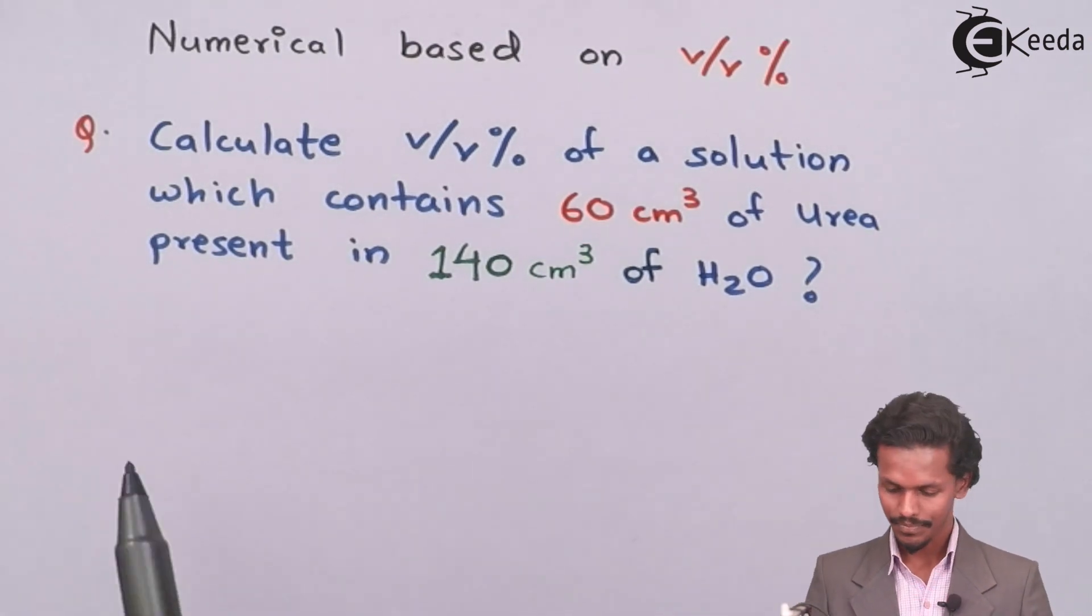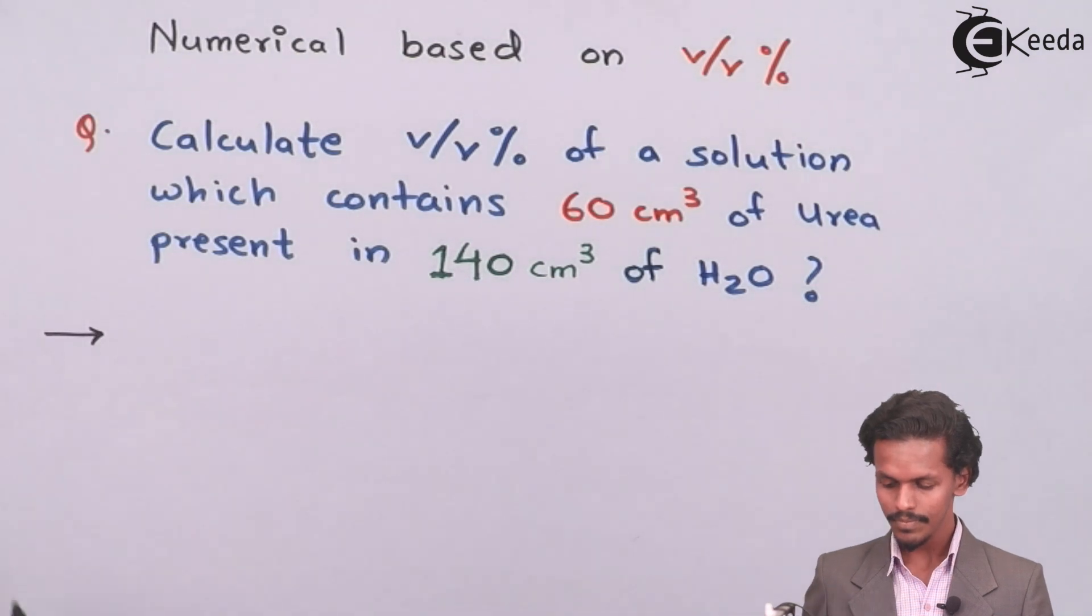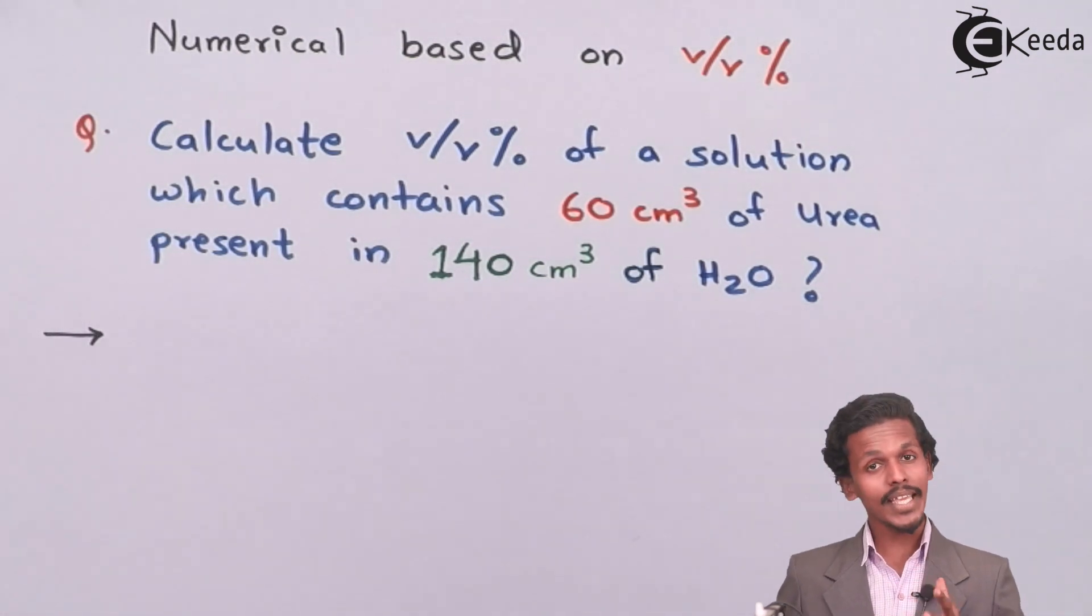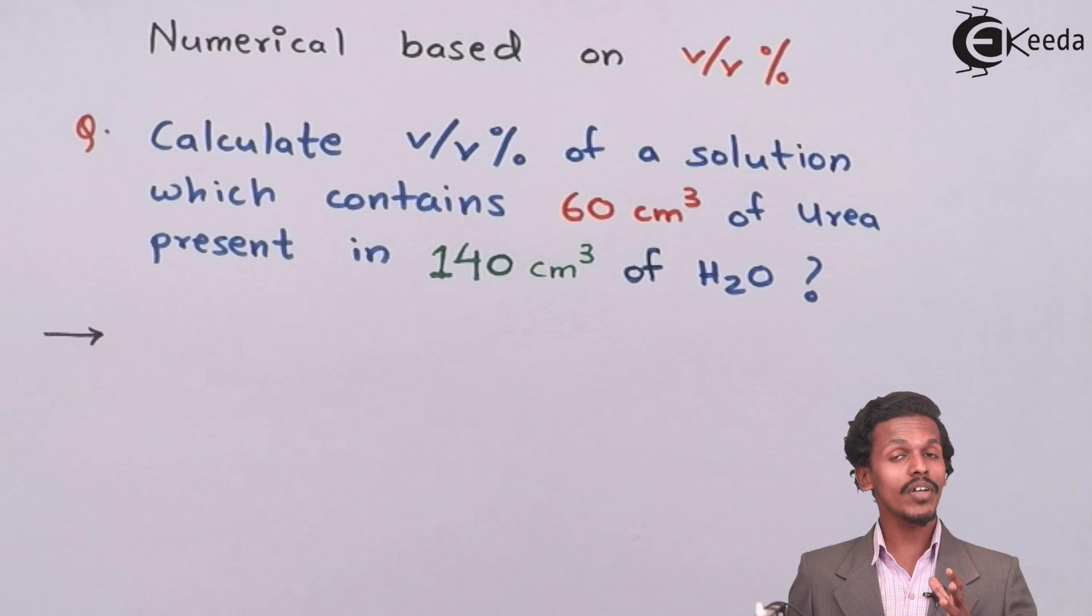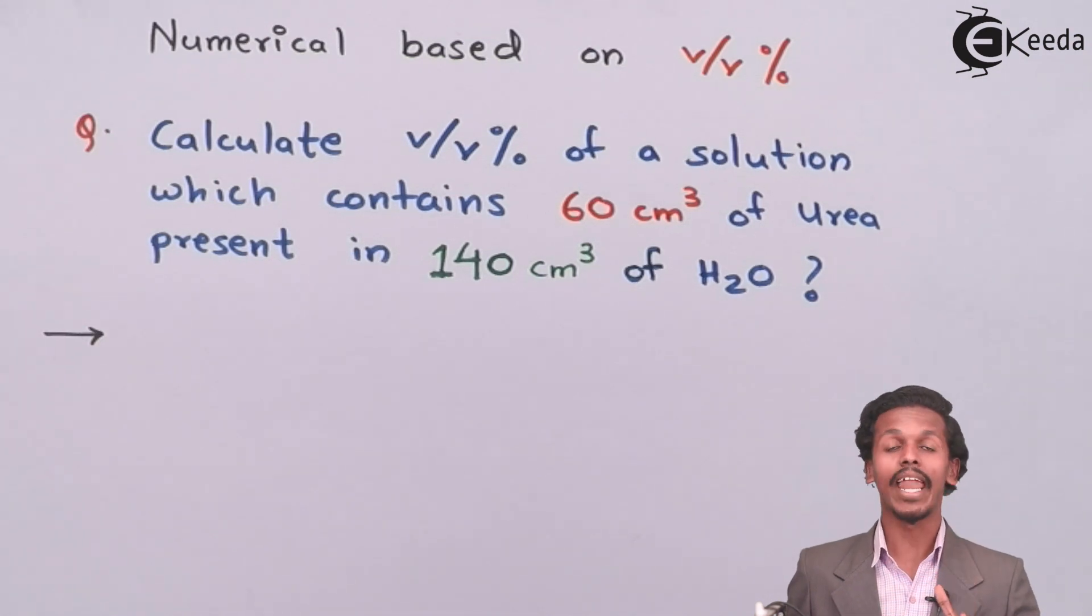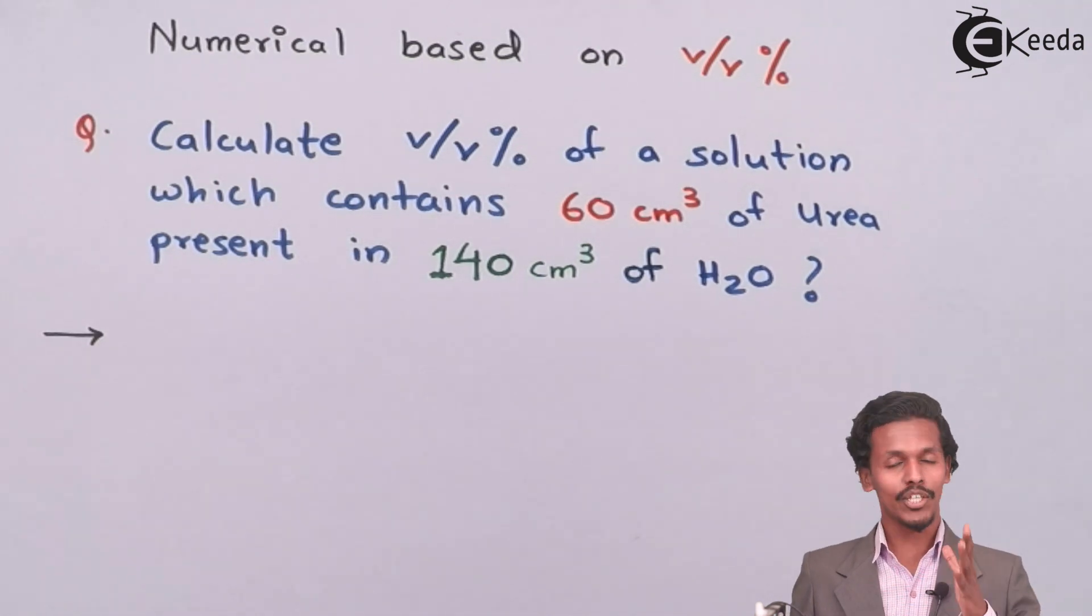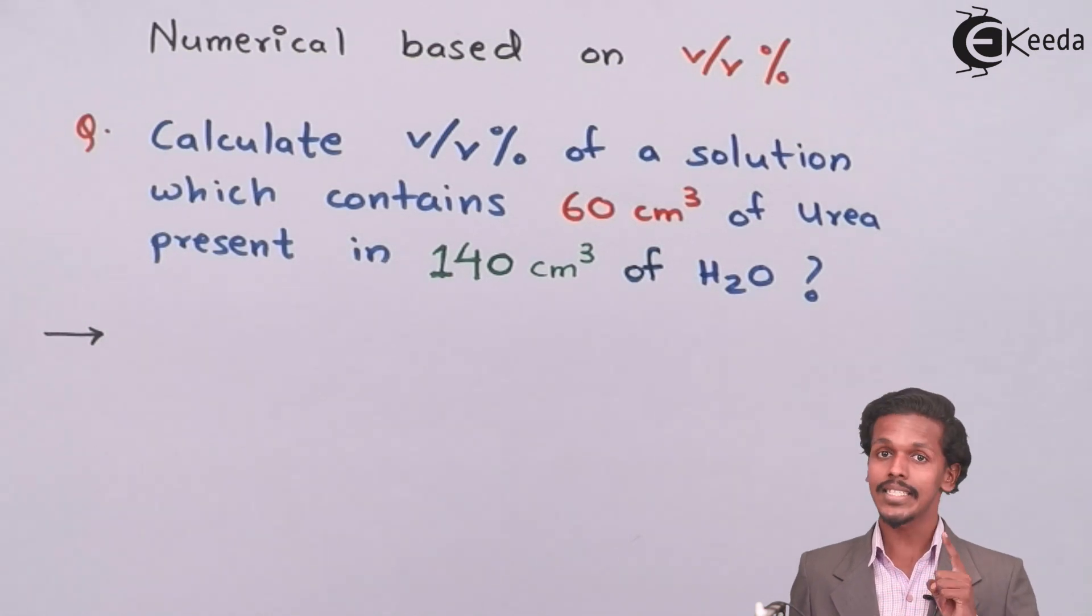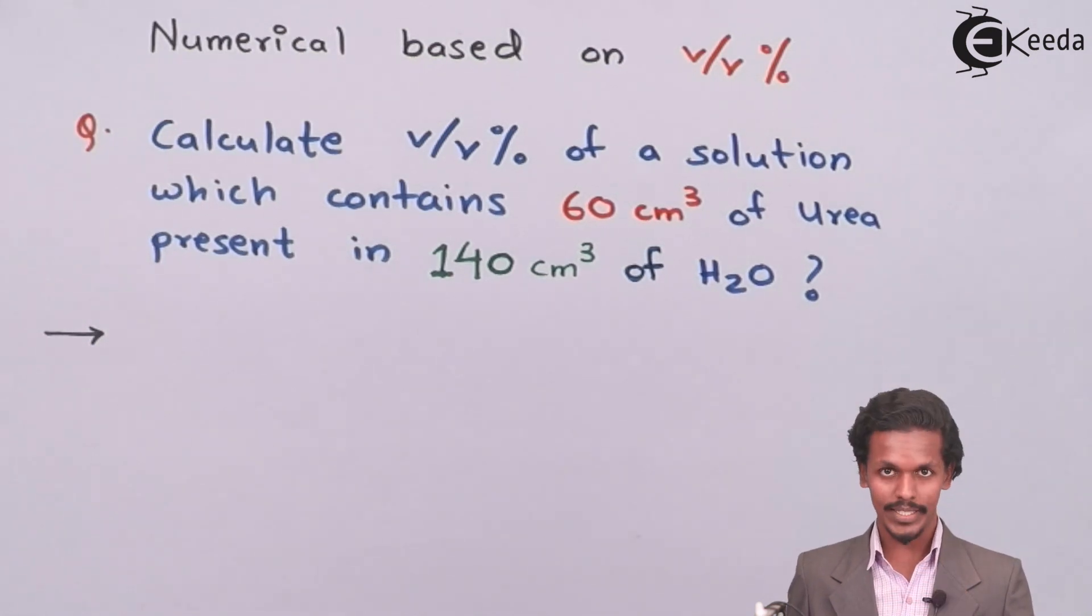First of all, we have to think about which one should be considered as solvent and which one should be considered as solute. As you can see, there are two quantities: 60 cm³ and 140 cm³. The 60 cm³, which has a value much less compared to 140, will be the solute, and 140 will be the solvent.